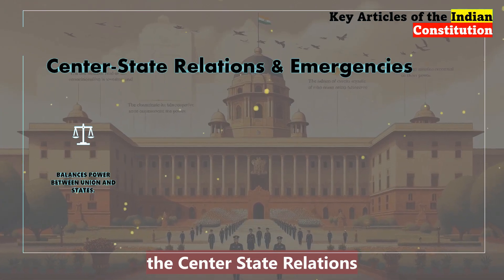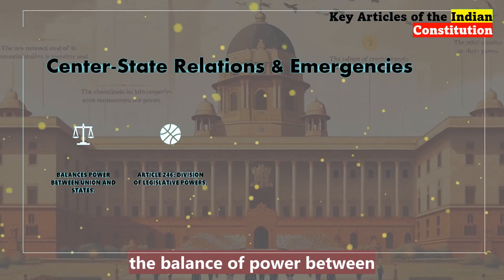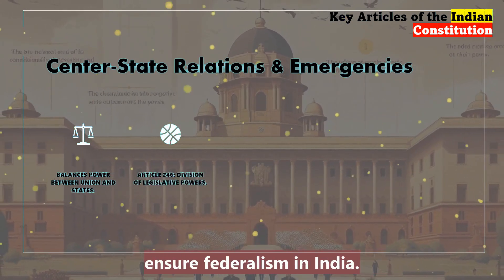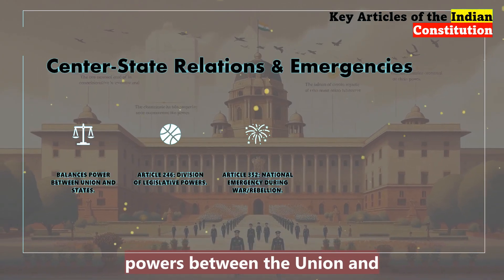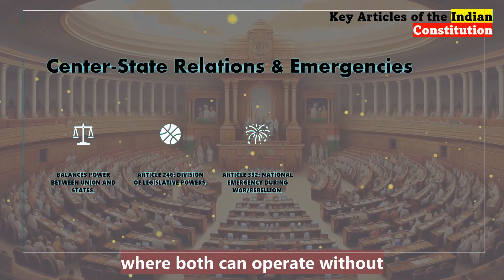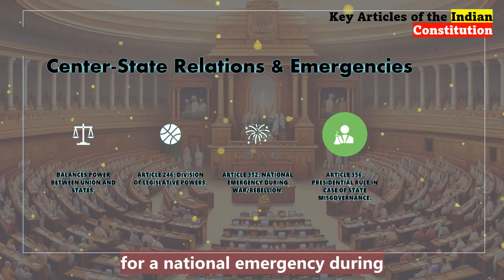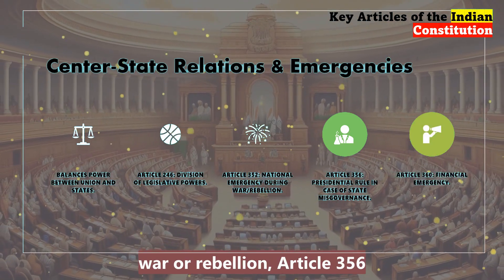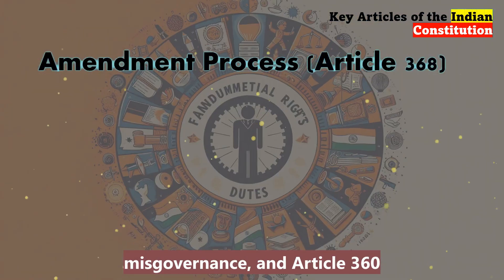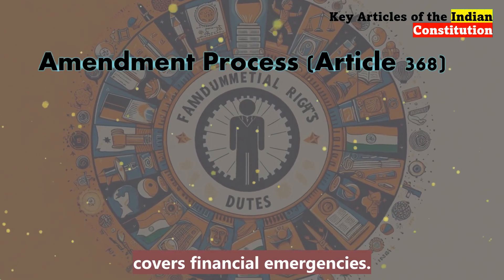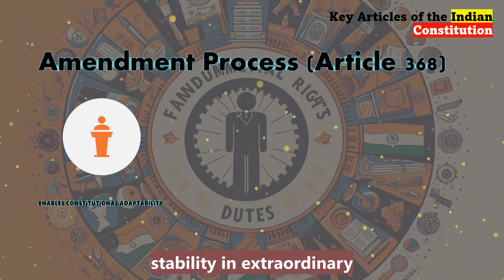Moving on to Centre-State Relations under Article 246 and Emergency Provisions — articles related to the balance of power between the union and state governments ensure federalism in India. Article 246 divides legislative powers between the union and states, fostering a balance where both can operate without interference. For emergency provisions, Article 352 allows for a national emergency during war or rebellion. Article 356 enables presidential control over a state in cases of misgovernance, and Article 366 covers financial emergencies. These provisions ensure that the government can maintain stability in extraordinary situations.